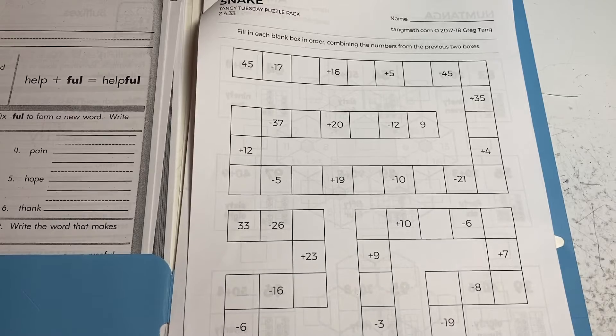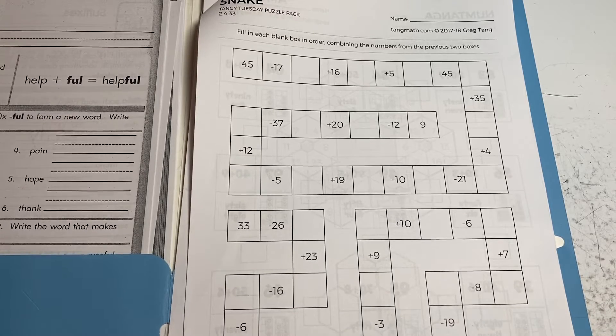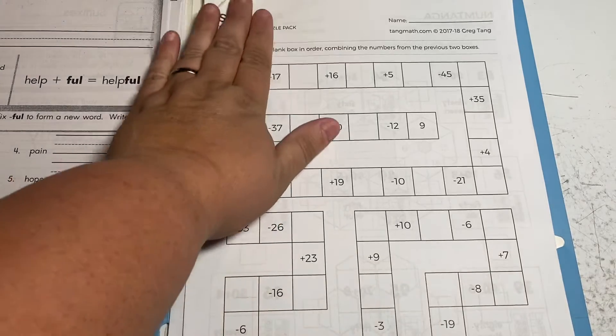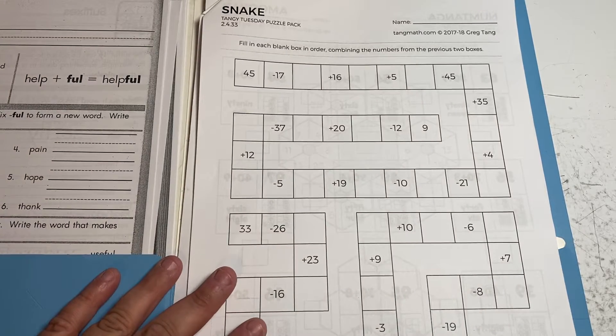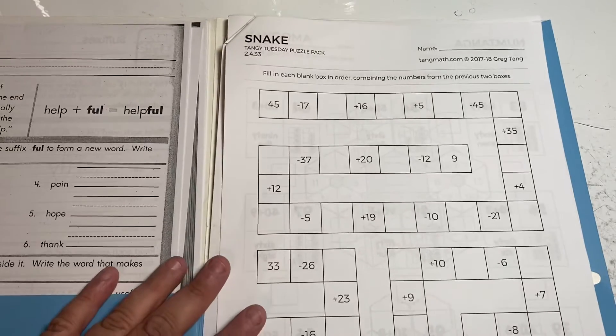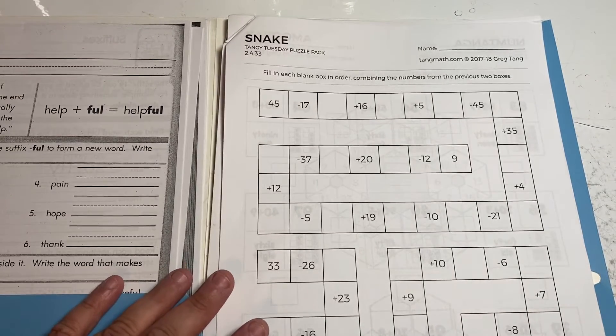The numbers are getting bigger, so you can either use a model or you can use your little tens and ones pieces. If you don't have them at your house, you can use a model.